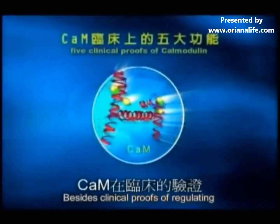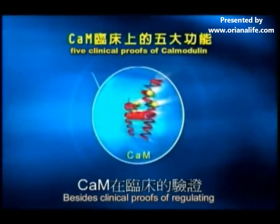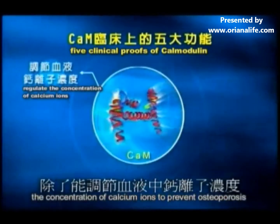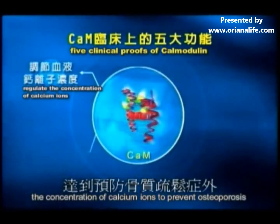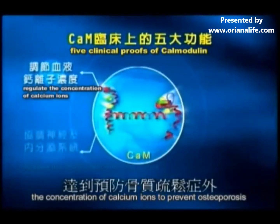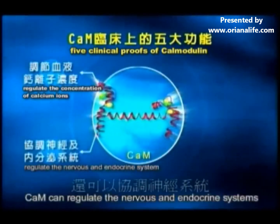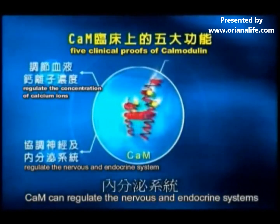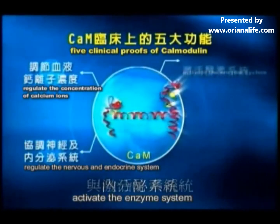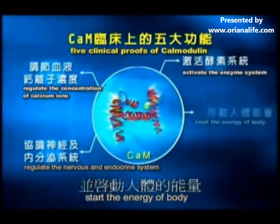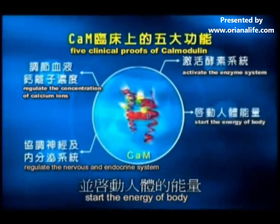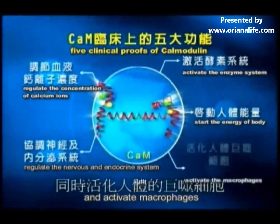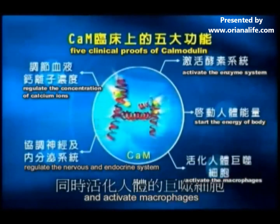Besides clinical proofs of regulating the concentration of calcium ions to prevent osteoporosis, Calmodulin can regulate the nervous and endocrine systems, activate the enzyme system, start the energy of the body, and activate macrophages.